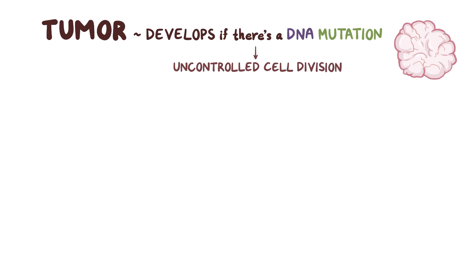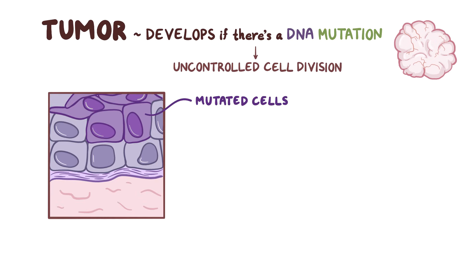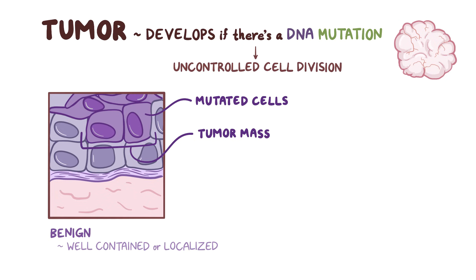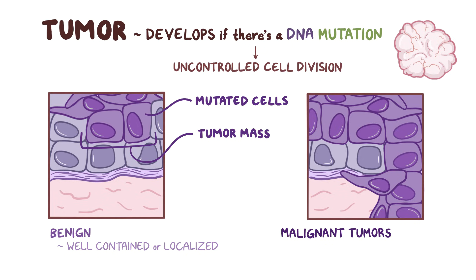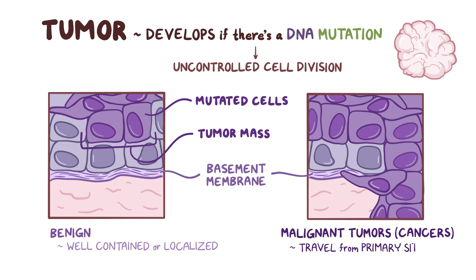As a result, the mutated cells can start piling up on each other and become a tumor mass. Some of these tumors are benign and stay well-contained or localized, but some can become malignant tumors or cancers — and these are the ones that break through their basement membrane and invade nearby tissues. Malignant tumor cells can get into nearby blood or lymph vessels and travel from the primary site to establish a secondary site of tumor growth somewhere else in the body, and that's called metastasis.